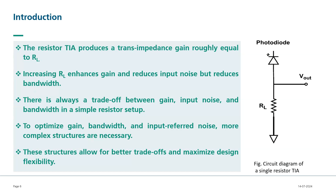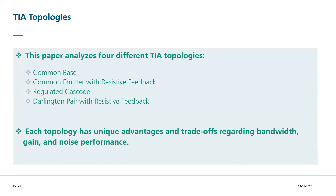To optimize gain, bandwidth, and the input-referred noise, complex structures are necessary. These structures allow for a better trade-off and maximize design flexibility. Coming to TIA topologies, this paper describes four TIA topologies: common base, common emitter with resistive feedback, regulated cascode, and Darlington pair with resistive feedback. Each topology has unique advantages and trade-offs regarding bandwidth, gain, and noise performance. Let's focus on each individual topology from now.